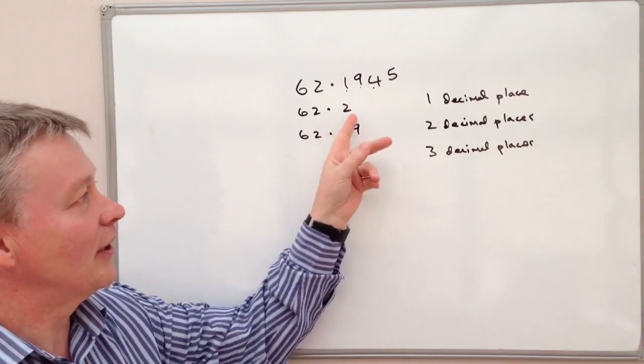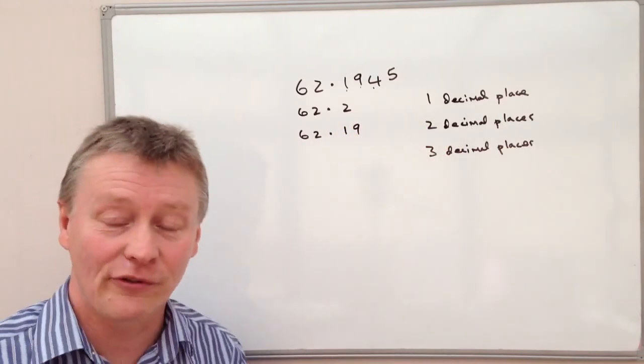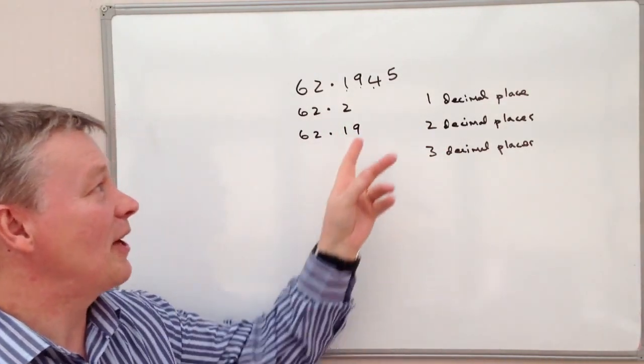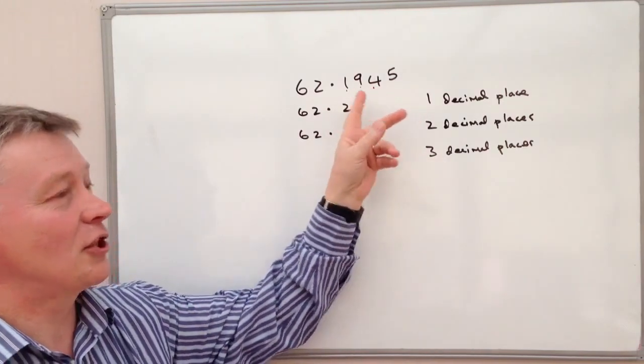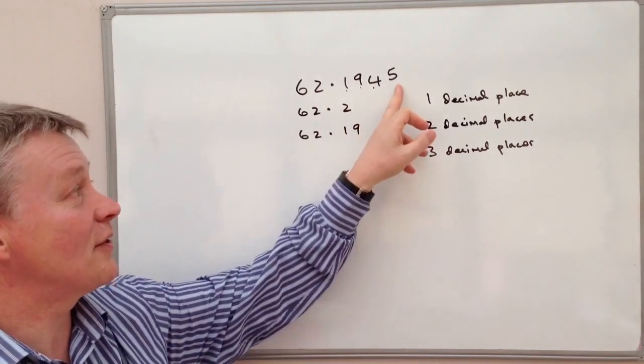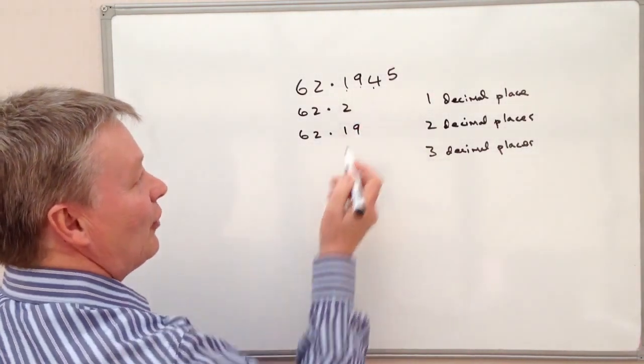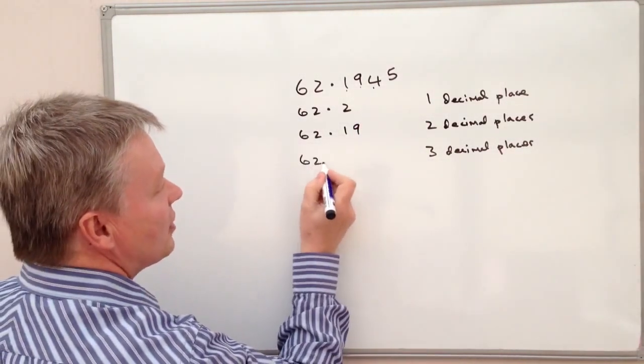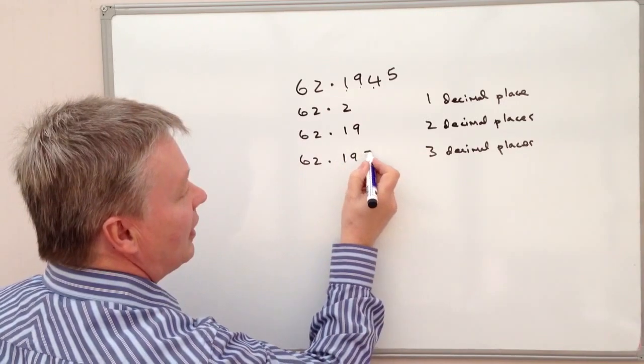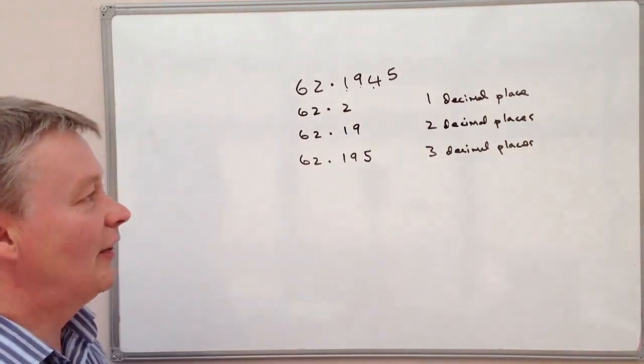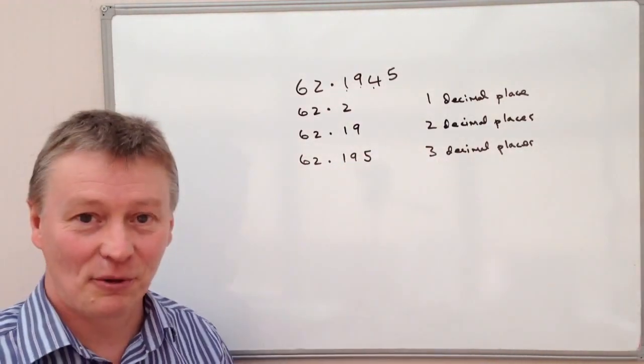So when I was looking at the first decimal place, I mentioned if it was five or above, it means that this number changes. Well, in this case, it is five. So therefore I'm going to change that four to 62.195. And that's to three decimal places.